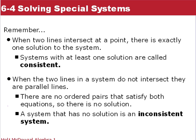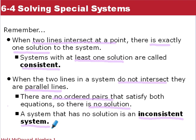Remember back when two lines intersect at a point, we have exactly one solution. Any systems with at least one solution are called consistent. When two lines in a system do not intersect, we know they're parallel lines, which means there are no ordered pairs that satisfy, so there's no solution. A system that has no solutions is called an inconsistent system. A system with solutions is consistent, and a system with no solutions is inconsistent.